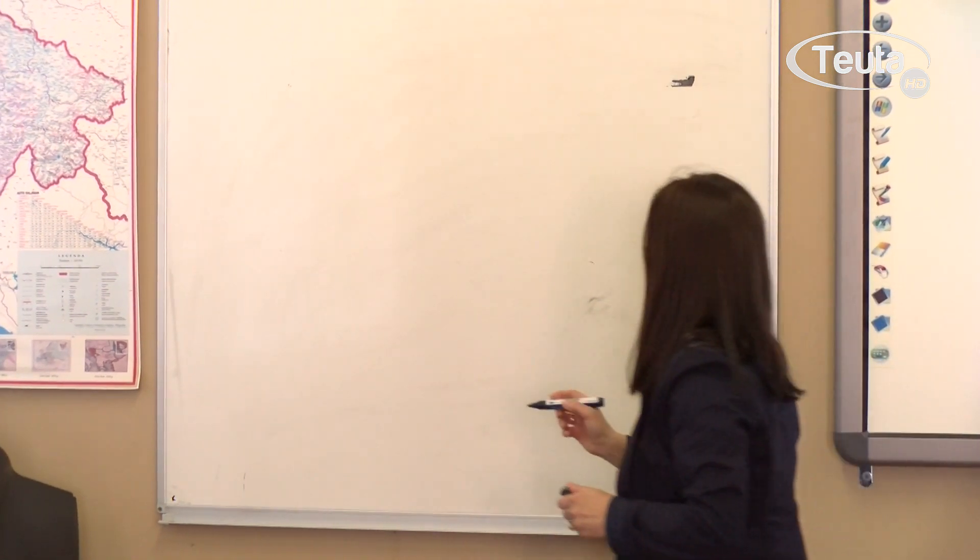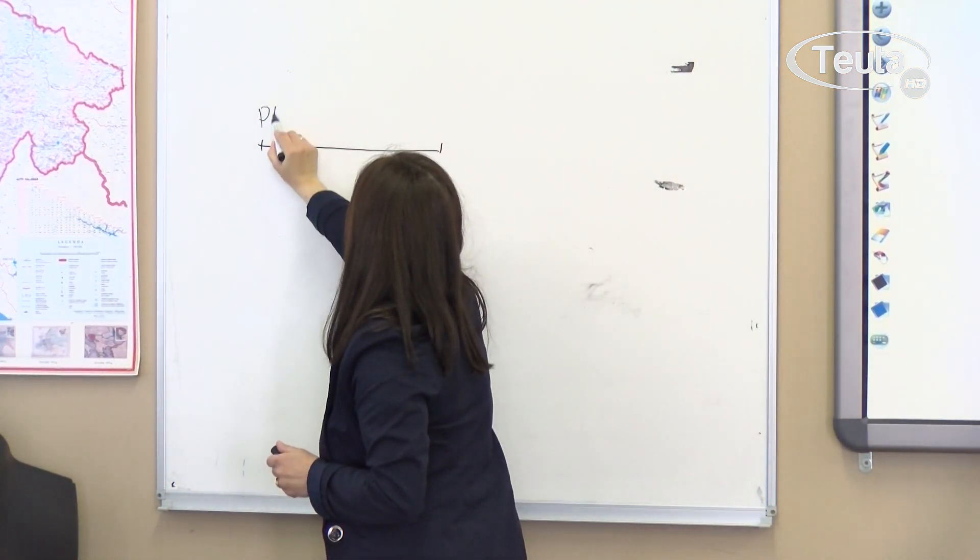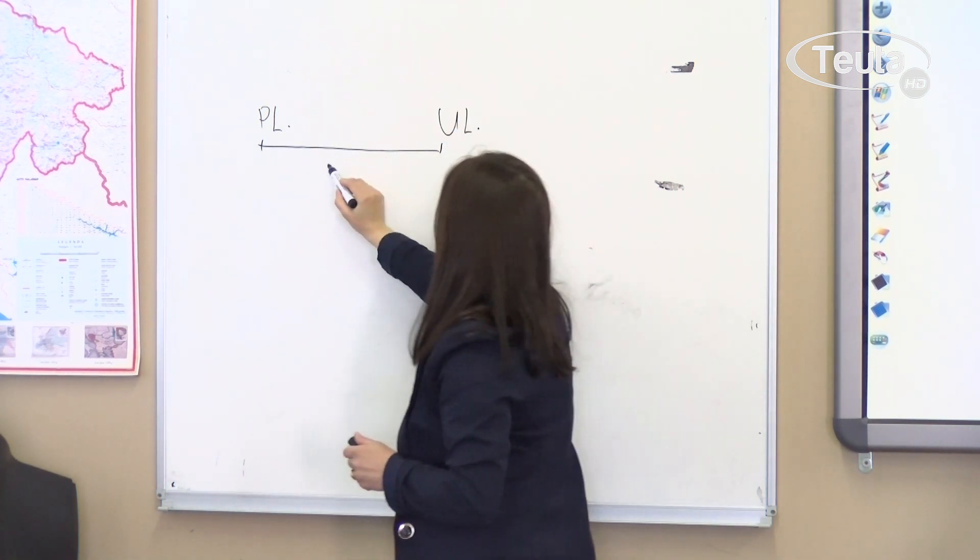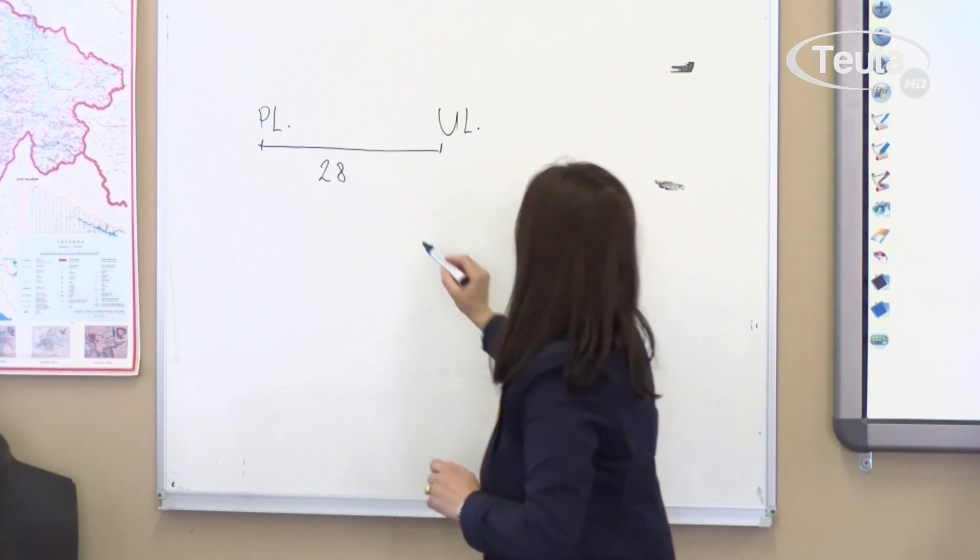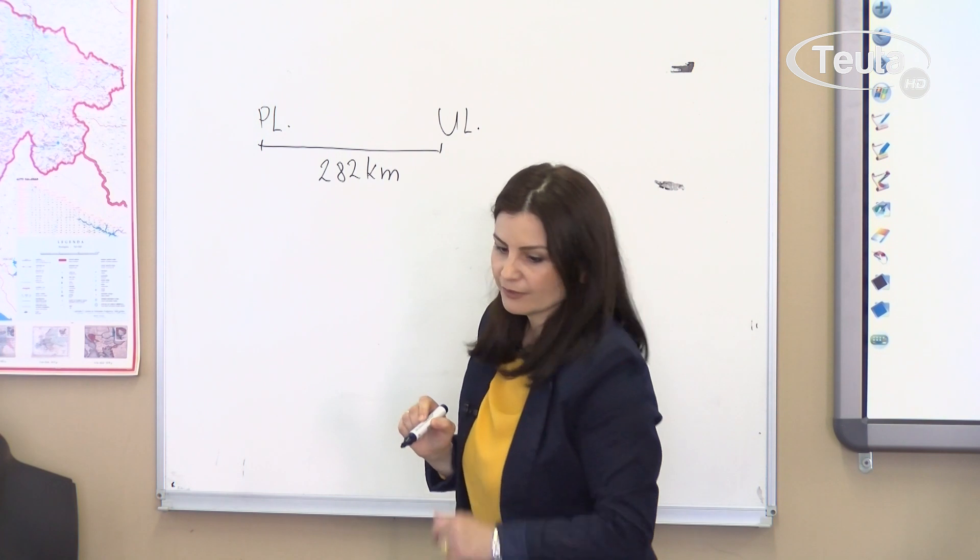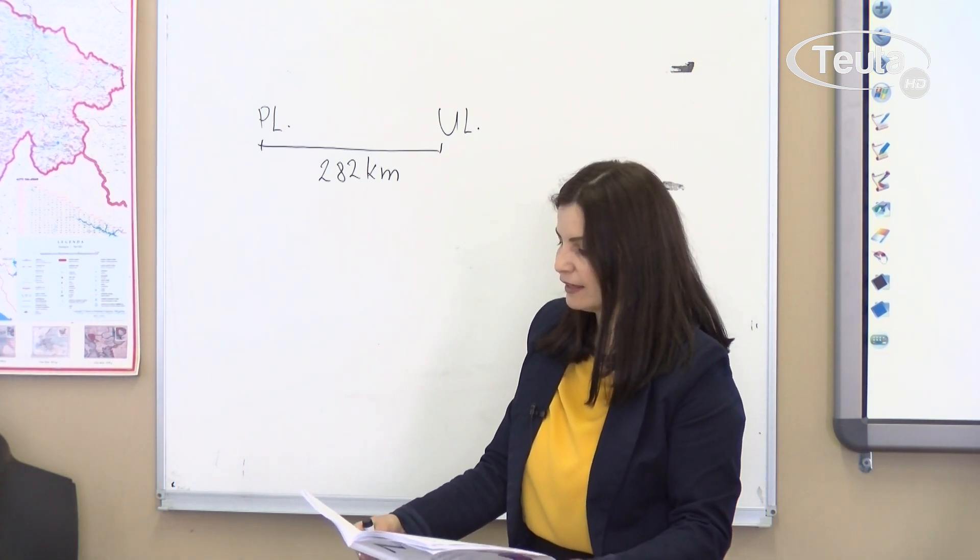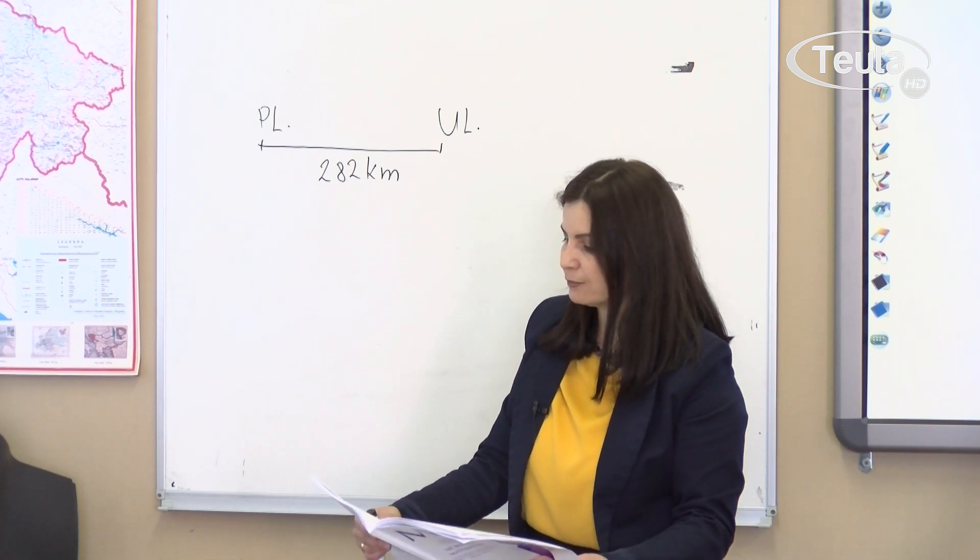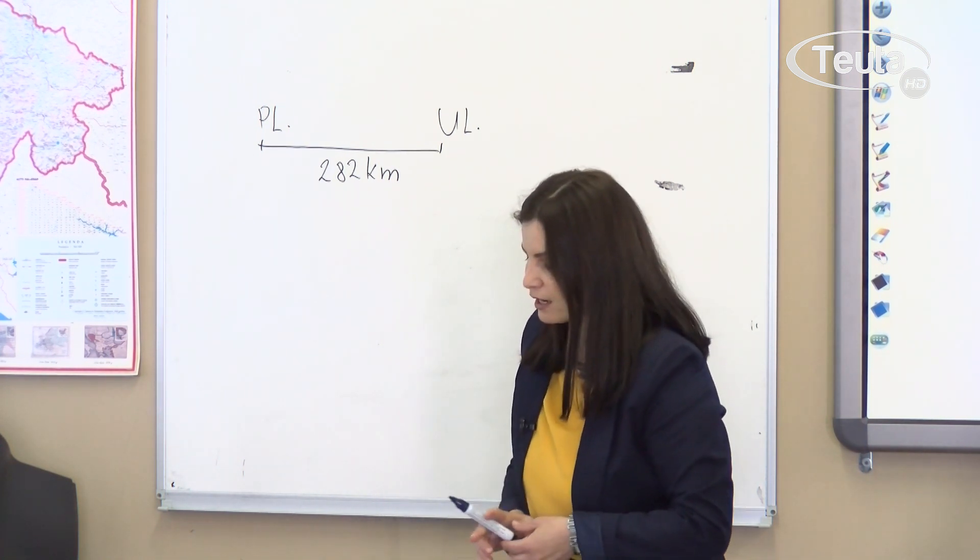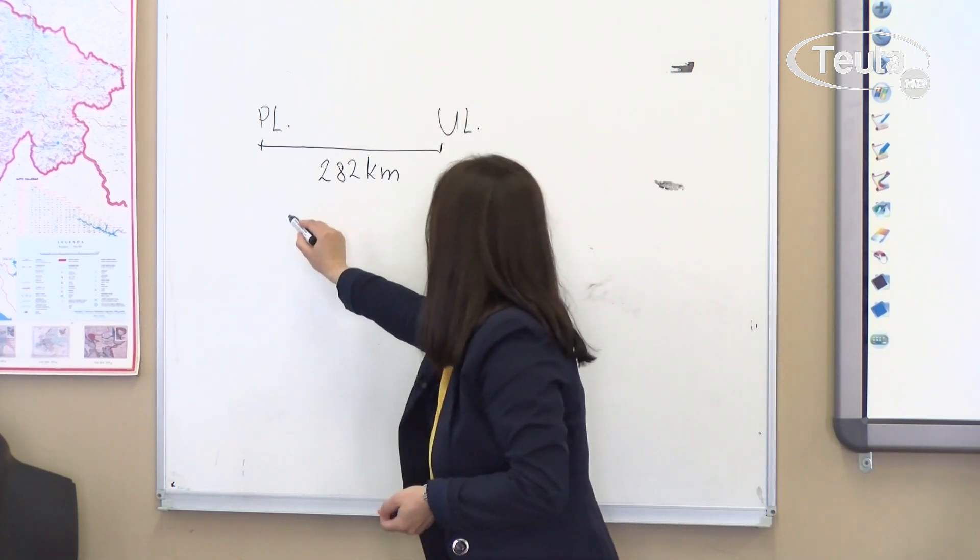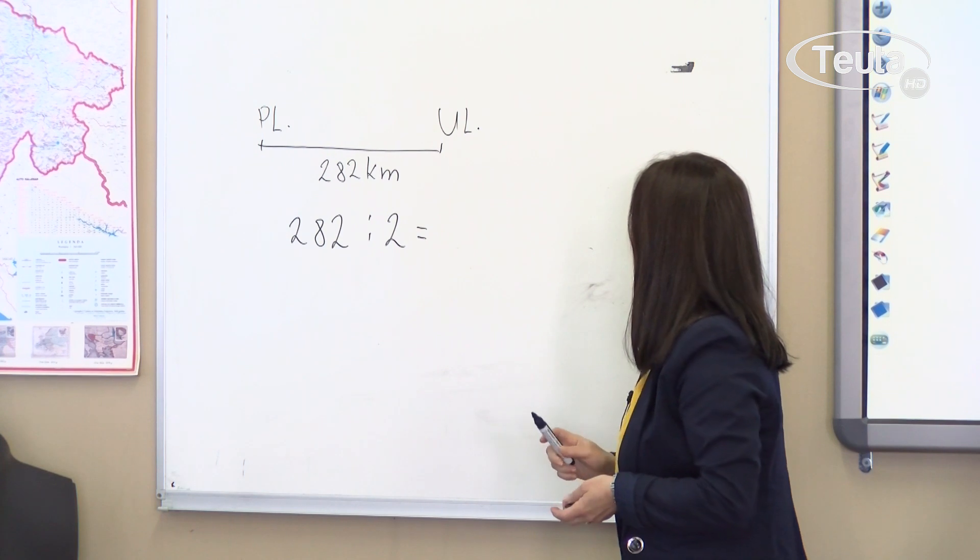Let's solve this problem together on the board. The route from Plevla to Ulqin is 282 kilometers in total. We need to find how many kilometers remain until the bus reaches its destination, since it has only traveled half the route. So we divide 282 by 2 to find the other half that remains.